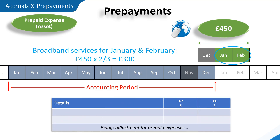Looking at the journal adjustment required for the current accounting period, we would reduce the broadband expense by £300, as this amount has been paid in the current accounting period but relates to the next. To decrease an expense we need a credit. The total broadband expense for our accounting period can then be recorded in the statement of profit or loss. We also need to record £300 of prepaid expenses in the prepayments account. This amount is an asset at the end of the accounting period, as the business has paid for a service that hasn't yet been delivered. Once all adjustments have been made, the balance would be transferred to the statement of financial position for our accounting period.